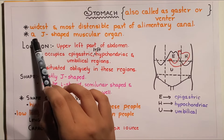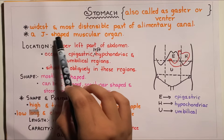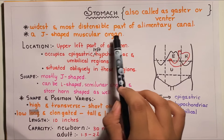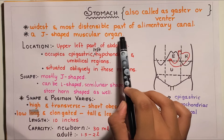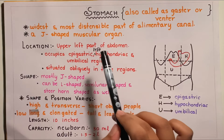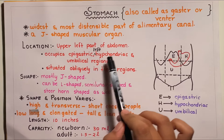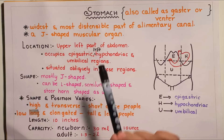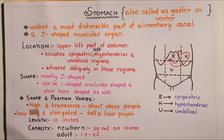The stomach is a J-shaped muscular organ. The stomach helps in storage of food as well as in the digestion of carbohydrates, proteins and fats.